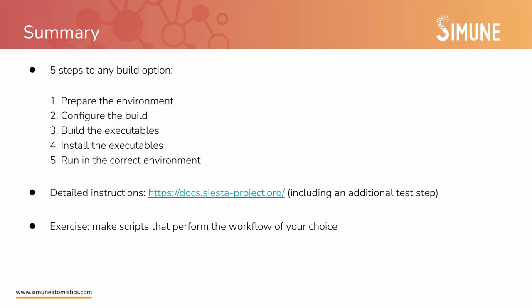To summarize, whatever the option you choose to build Siesta, you will have to follow five steps: prepare the environment, configure the build, build the executables, install them, and then run them in the correct environment. Detailed instructions are available on the Siesta website, and they include additional steps like testing before installing the executables. If you want to do an exercise, you can try this process and then make scripts that perform the workflows that you have chosen. Thank you for your attention.